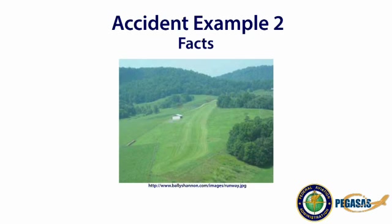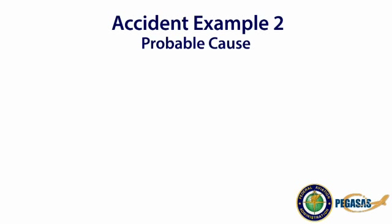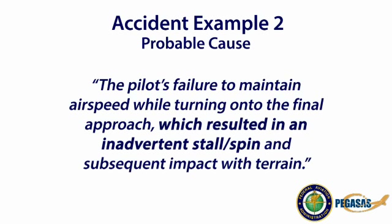This is a picture taken from the final approach course, and as you can see, the terrain is varying and the pilot would need to modify the approach path. The NTSB found the probable cause to be the pilot's failure to maintain airspeed while turning onto the final approach, which resulted in an inadvertent stall-spin and subsequent impact with terrain.